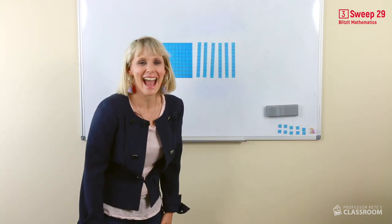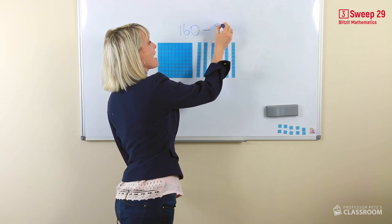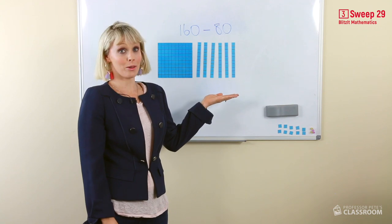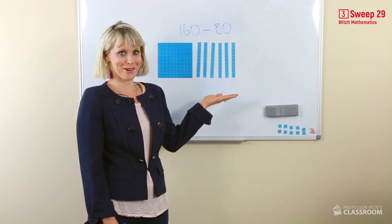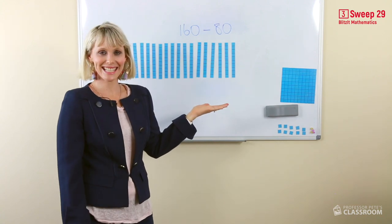Hey, here we have 160 take away 80. Now I've only got six tens here. I'm going to need to regroup. Here we have 16 tens.